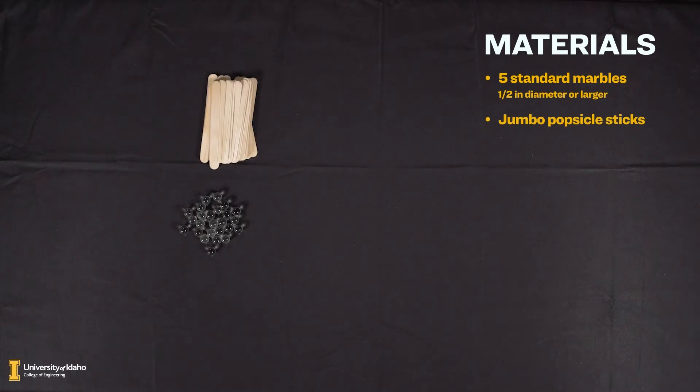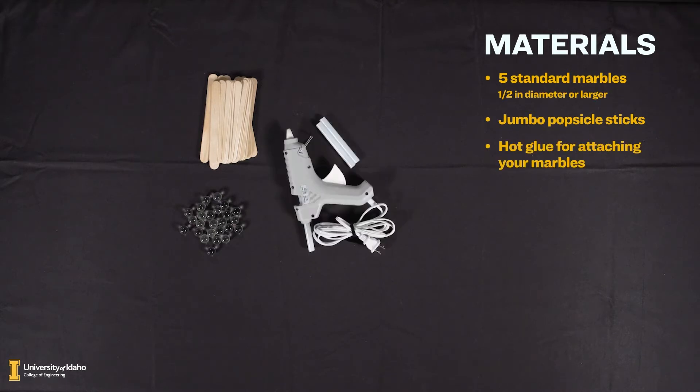Then, you'll need jumbo popsicle sticks. The large popsicles are preferred over normal sized ones for more stability. These can also be found at crafting stores. Next, you're going to need hot glue for attaching your marbles to your string. You're going to need five pieces of string, eight to twelve inches long. A string that does not stretch is perfect.